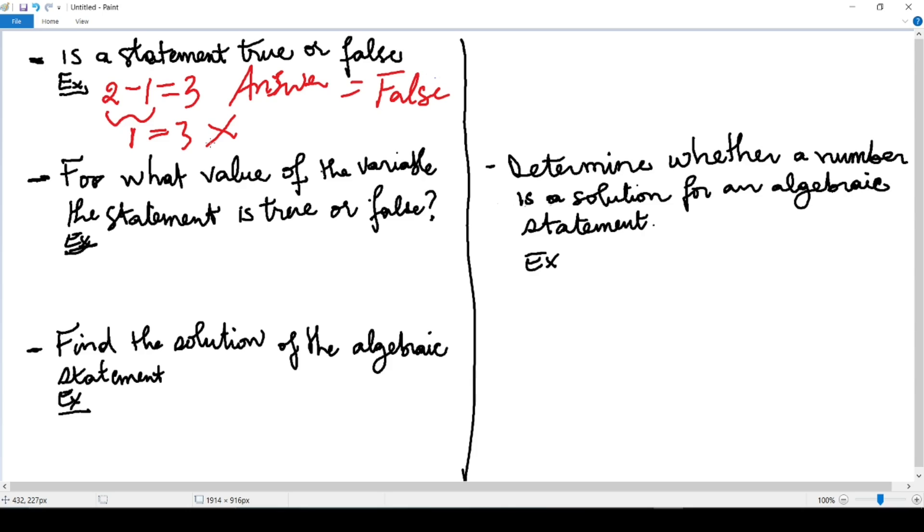Another question is: for what value of the variable is the statement true or false? What does it mean? If I have, for instance, 3x plus 1 equals 10, for what value of x—x is my variable—is this statement true or false? The answer will be: if x equals 3, the equation is true. Why? Because if I substitute, I will have 3 times 3 plus 1 equals 10. This 3 times 3 will give me 9, 9 plus 1 will give me 10, then 10 equals 10—true.